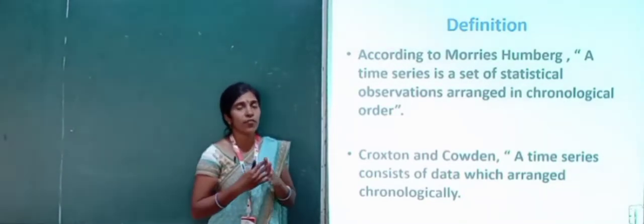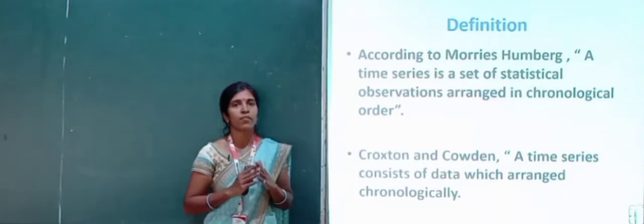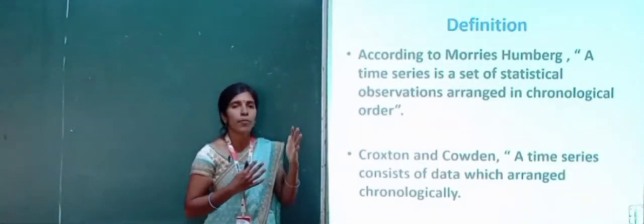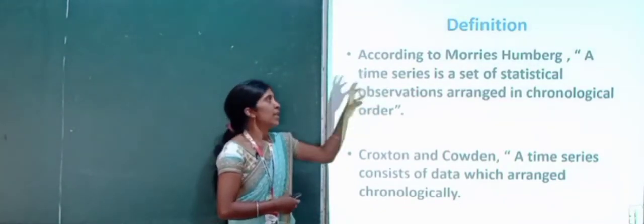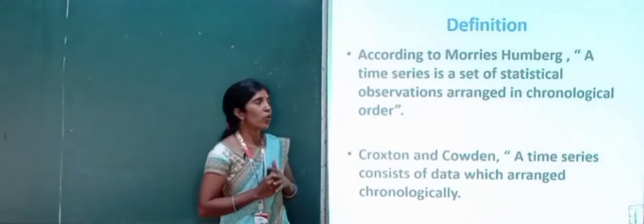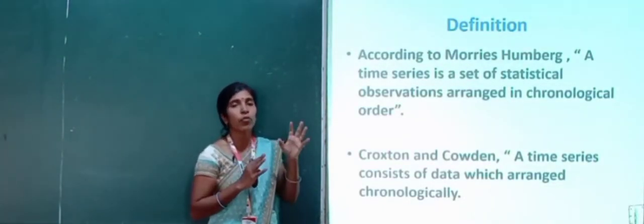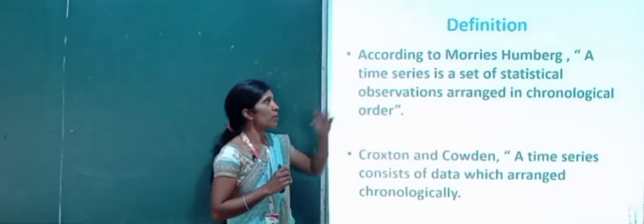In time series analysis, in order to forecast the future, we need information about past performance. Whatever past performance data is there should be collected, observed, and recorded. That is a set of statistical observations that should be arranged in chronological order — that is, arranged serially in accordance with time. That is the definition given by Maurice Humberg.